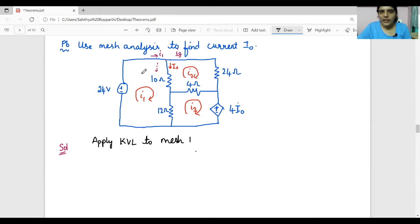If you observe clearly, I1 is flowing from top to bottom whereas I2 is flowing from bottom to top - both are in opposite directions. So it is I1 minus I2 because you are considering that I1 is greater than the remaining current. Similarly for the 12 ohm resistor, the common current flowing through this resistor is I1 minus I3.